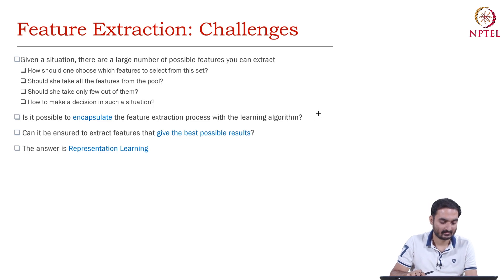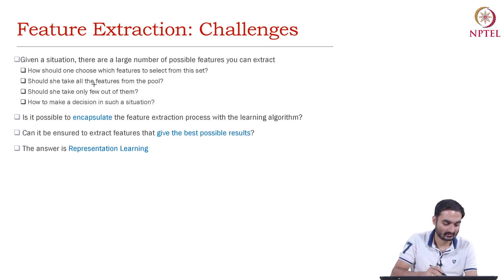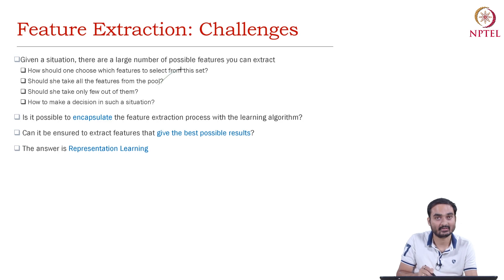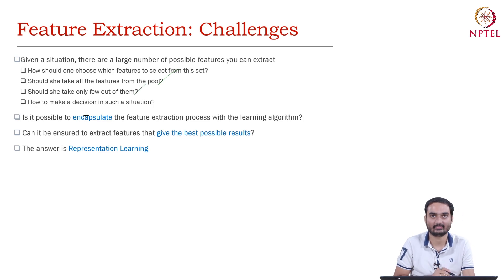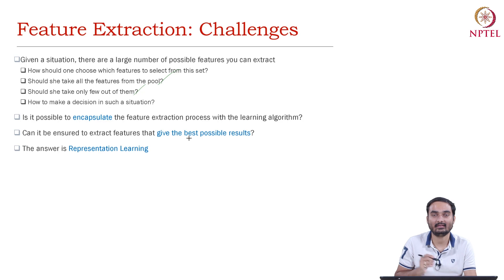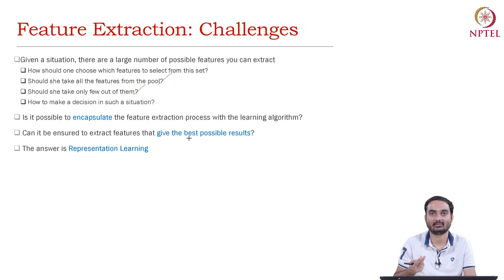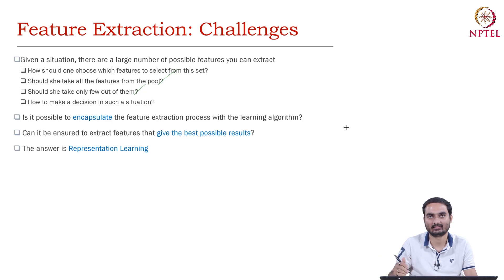What are the challenges of manual feature extraction? Given a situation, there are a large number of possible features you can extract. How should one choose which features to select? Should she take all the features from the pool, or only a few? How to make a decision in such a situation? Is it possible to encapsulate the feature extraction process with a learning algorithm? What happens if we replace this manually handcrafted feature extraction process with an automated engine? That automated engine will automatically extract features, automatically identify important features, and let the classifier do the end task.